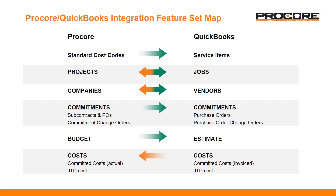Projects aren't the only area where we see this bidirectional integration. The same is true about the way the integration works between the Procore company directory and your QuickBooks vendor list. Any companies in your Procore company directory can be easily exported to QuickBooks where they are used to create new vendor records. And since this works in both directions, any vendors in your QuickBooks vendor list can be used to create new company records in the Procore company directory with the click of a button.